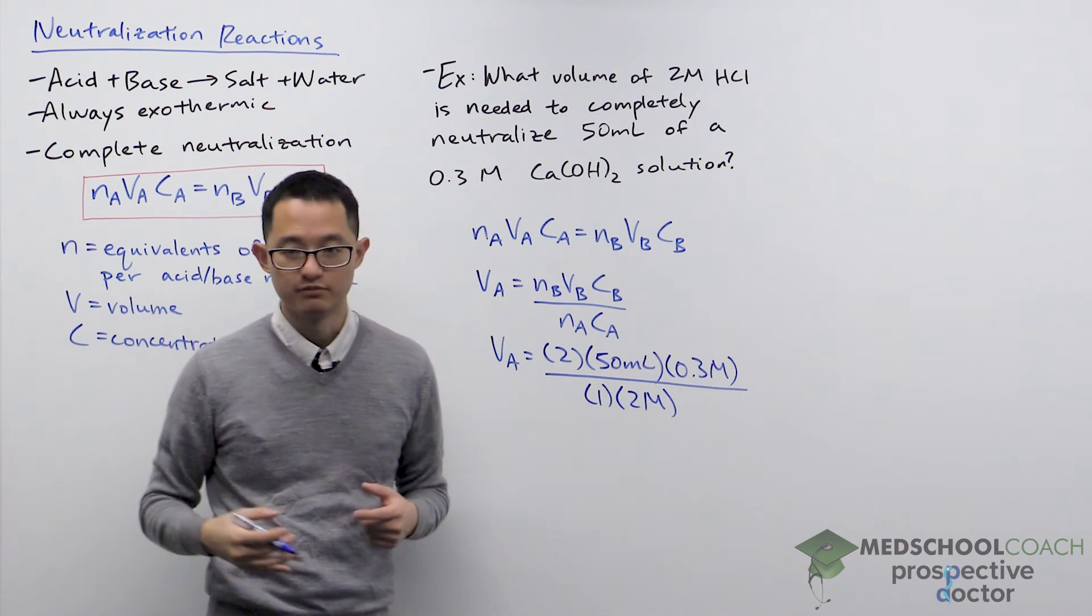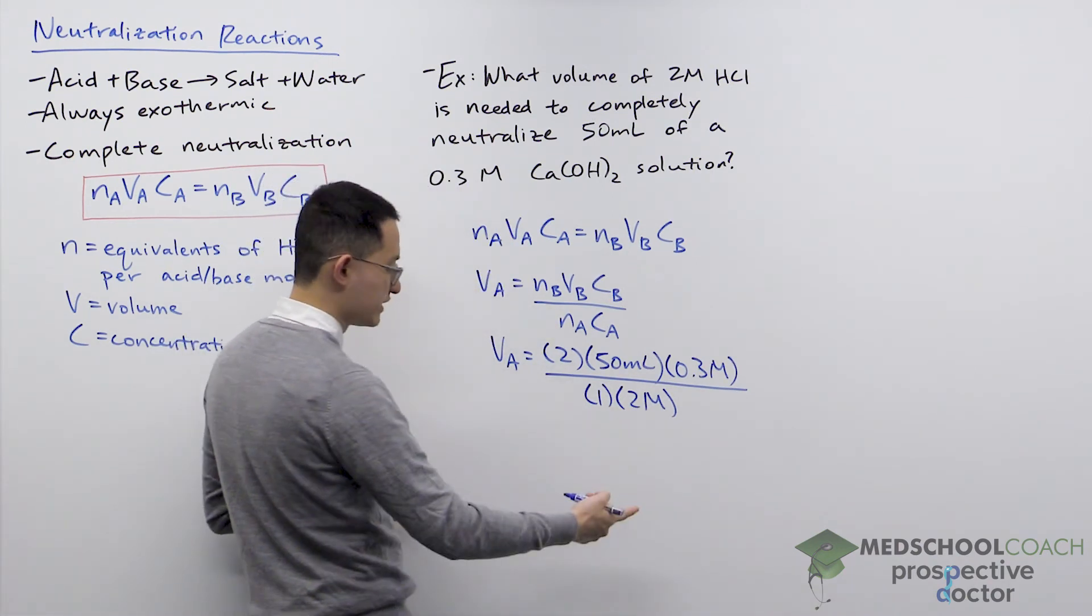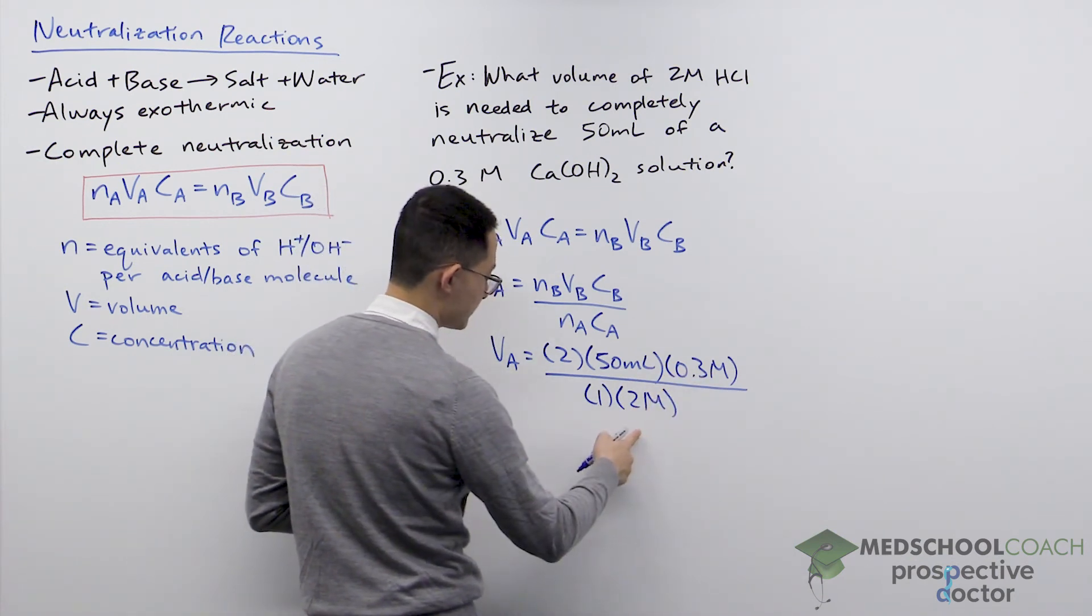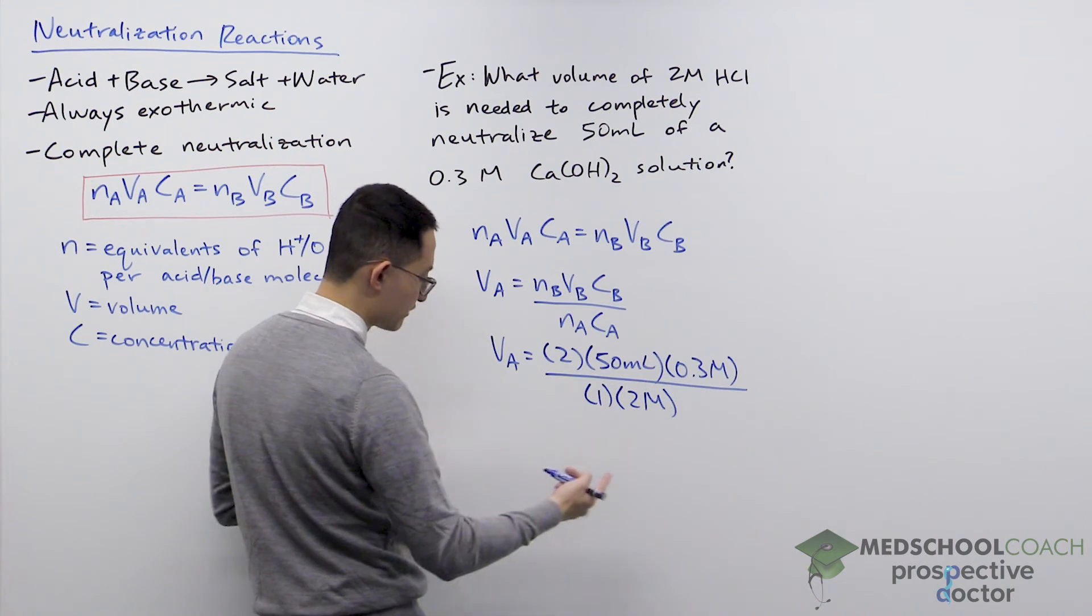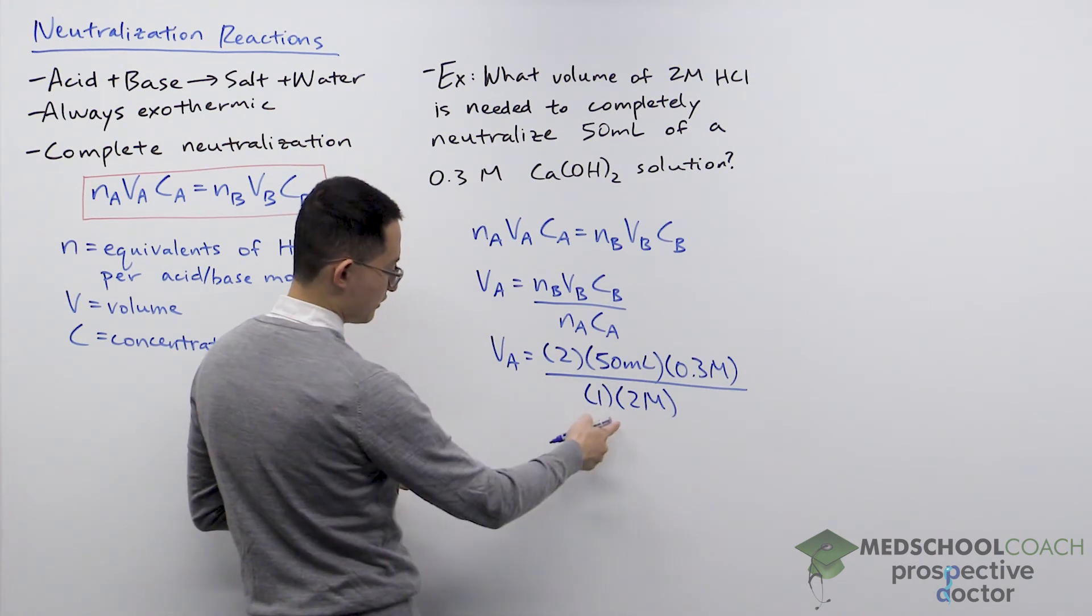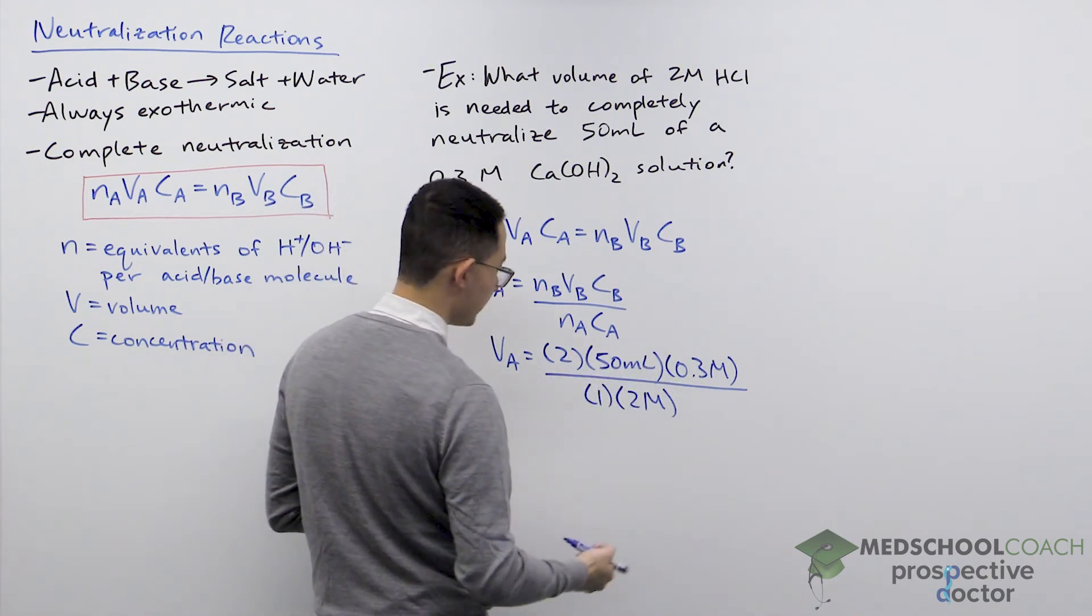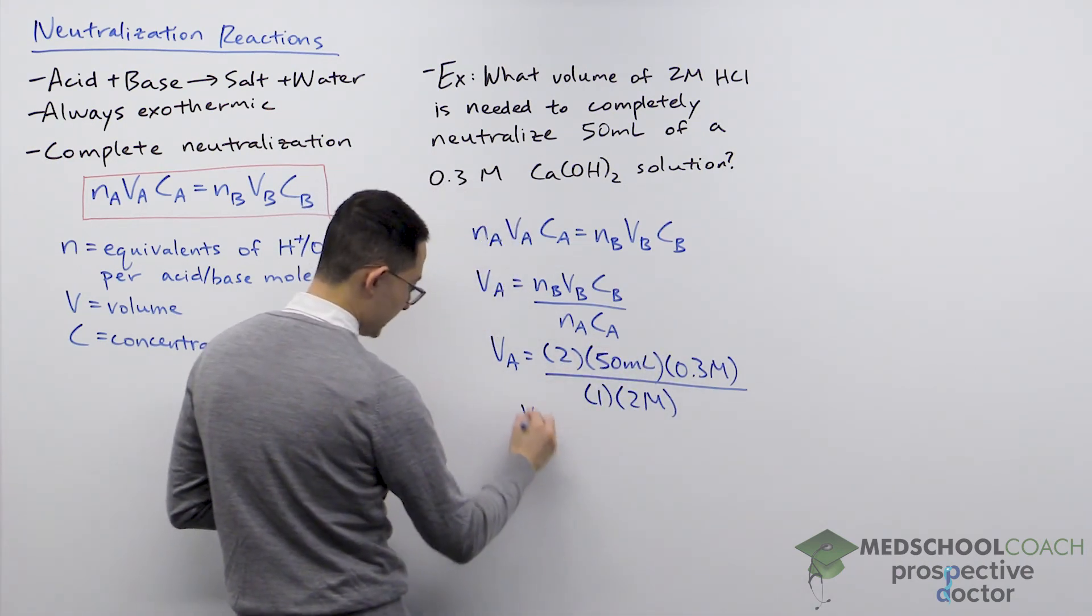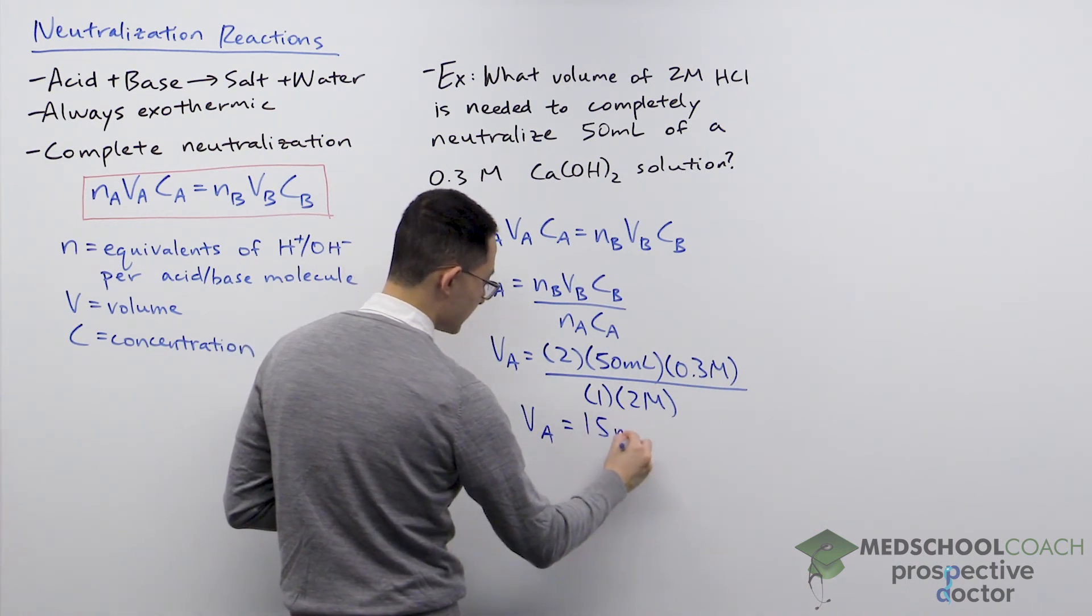The nice thing here is you can see that in terms of the units, the molars are going to cancel out. That's going to leave us with units of milliliters, which is exactly what we're looking for. Here the 2 and the 2 cancel out, so we're just doing 50 times 0.3. And that's going to give us 15 milliliters.